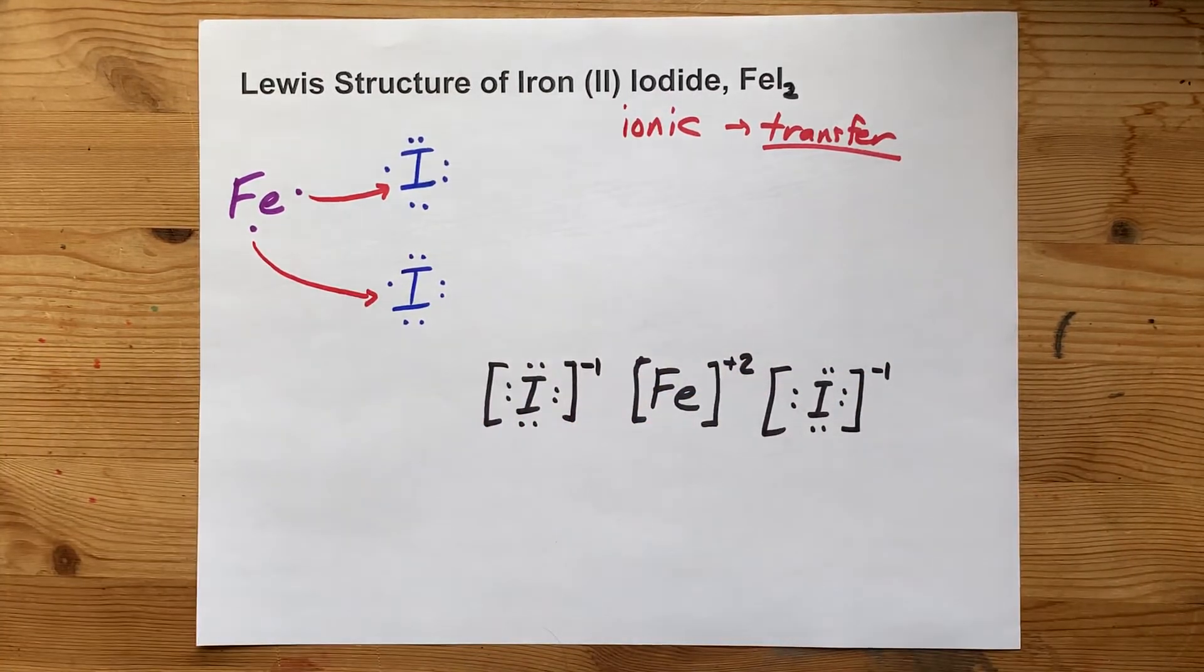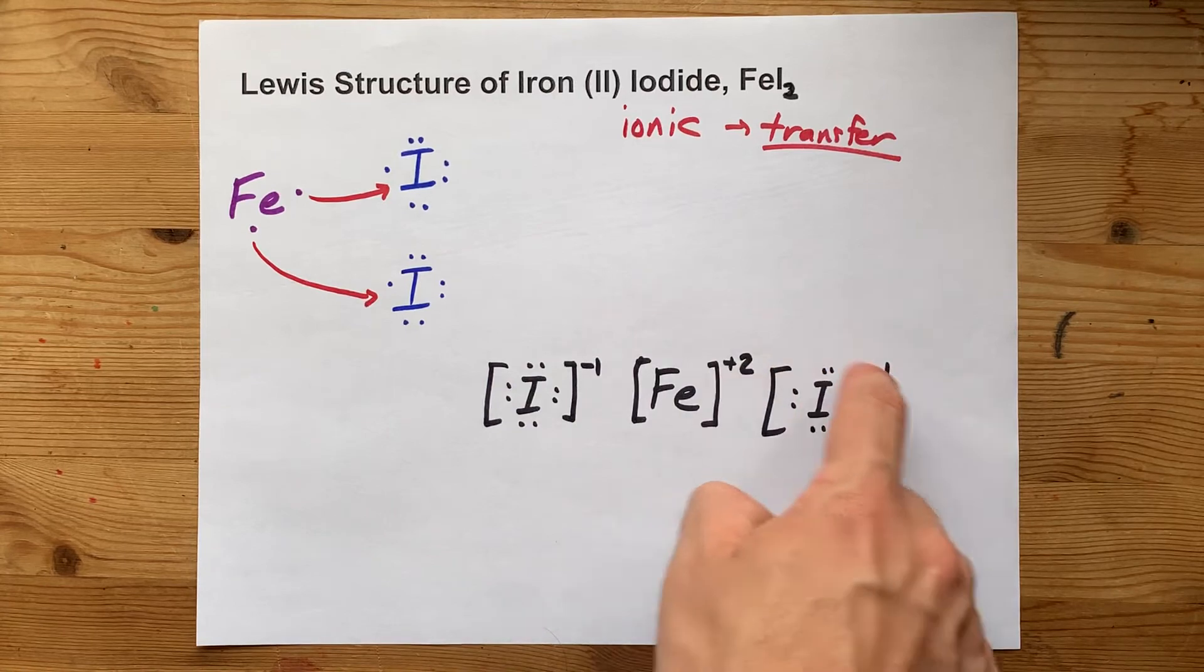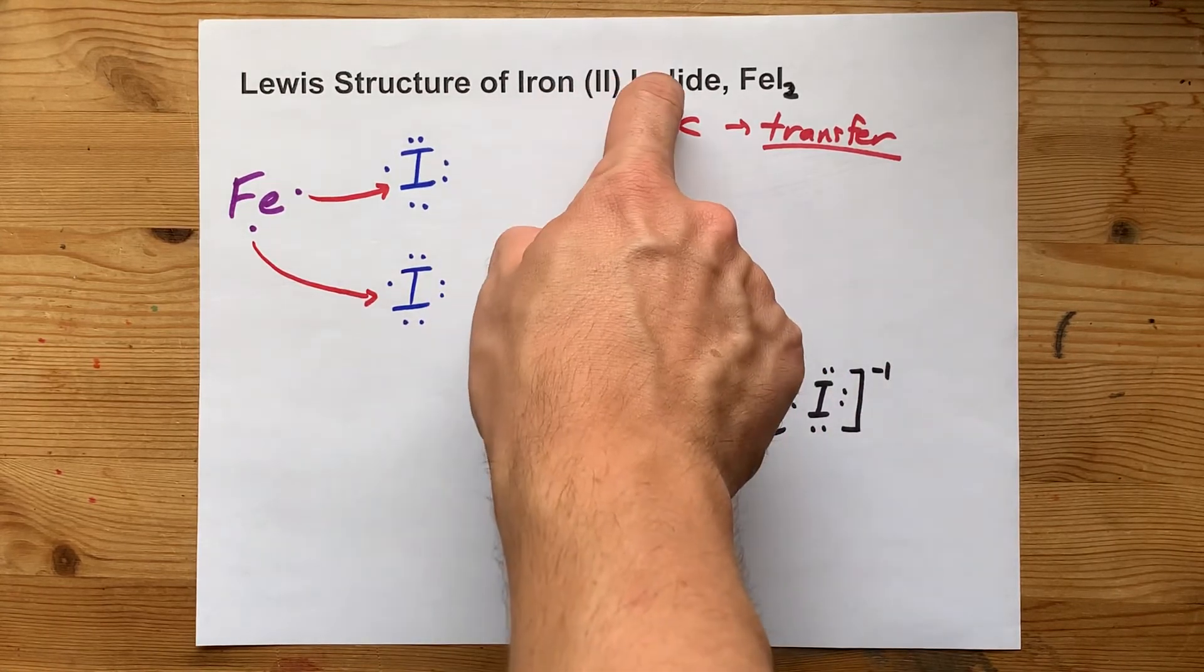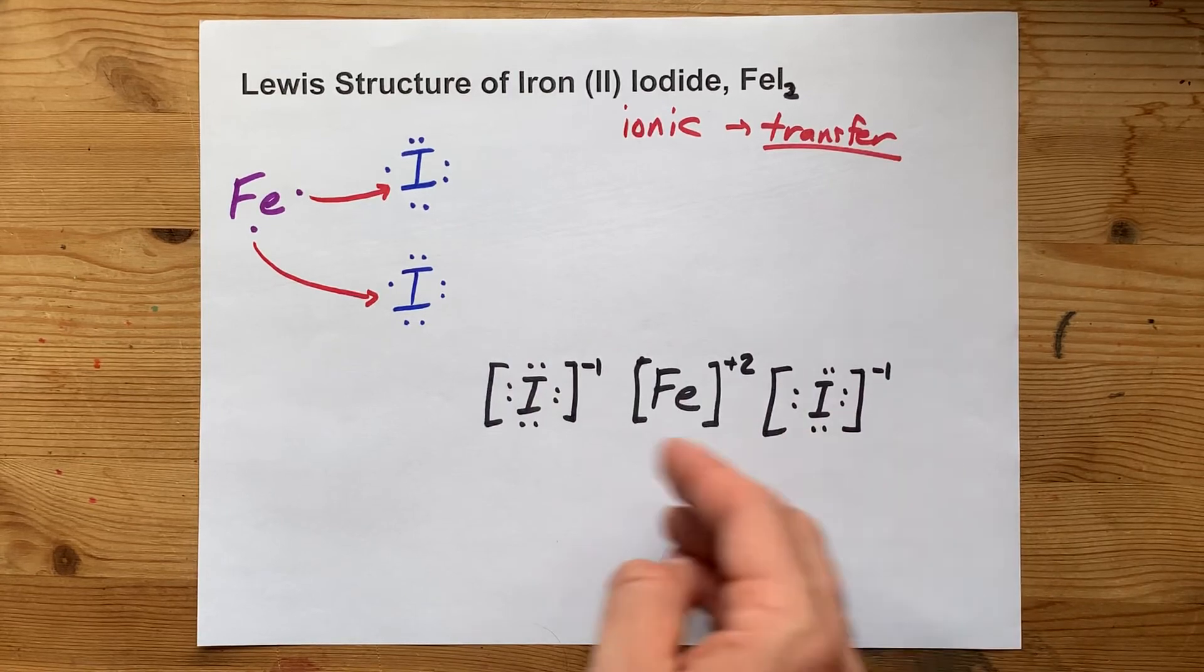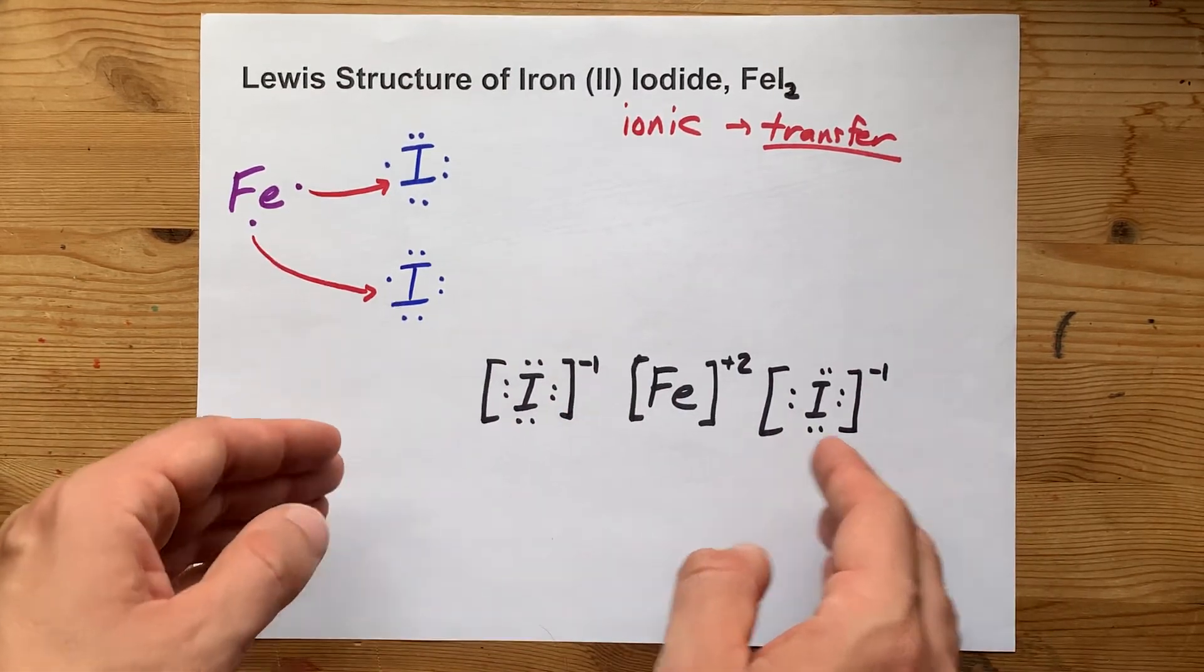And there is your completed Lewis structure. You have to show the ion charges because it's a metal and a non-metal. That's ionic. And here is your ionic Lewis structure. Thanks for being with me, and best of luck.